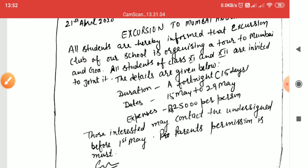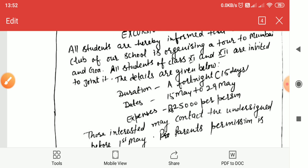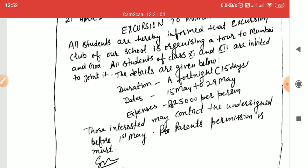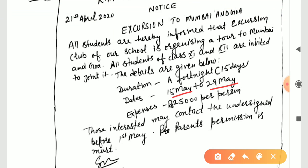Details: duration — a fortnight or 15 days; dates — 15 May to 29 May; expense — rupees 25,000 per student. Those interested may contact the undersigned before a particular date. A parent's permission or No Objection Certificate from parents is a must. Also draw a box around the notice.